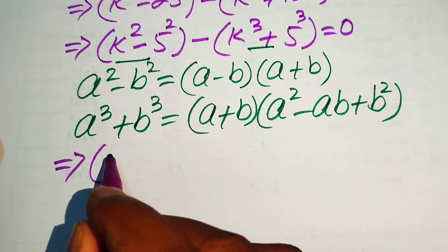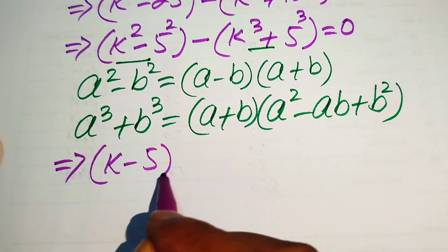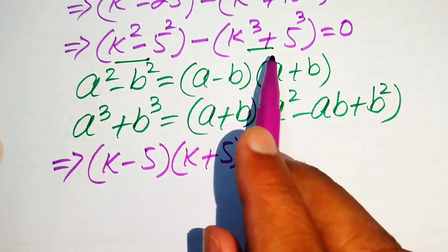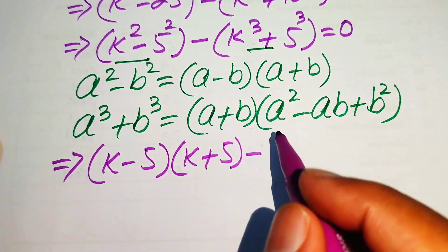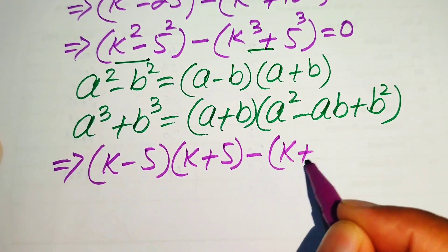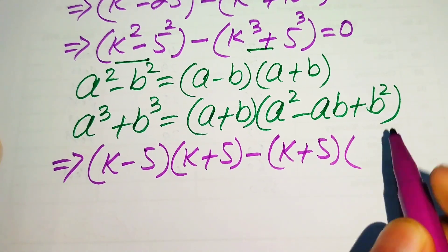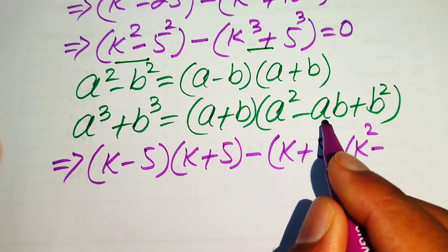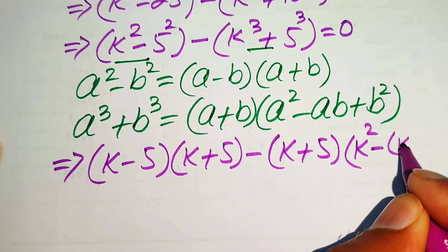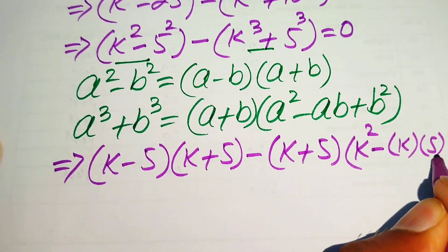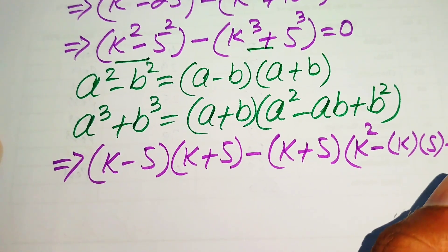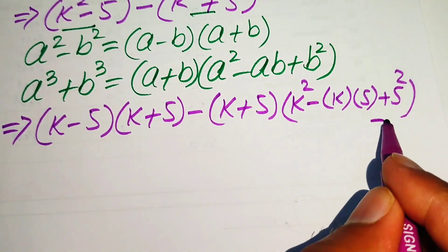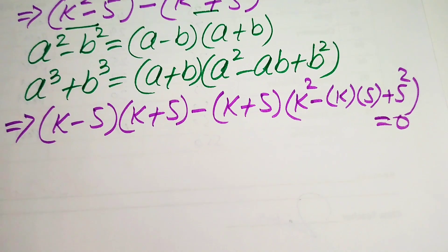Applying the square identity to the first term gives (k minus 5)(k plus 5). Applying the sum of cubes formula to the second term gives (k plus 5)(k squared minus ab), where a is k and b is 5, plus b squared, so plus 5 squared.